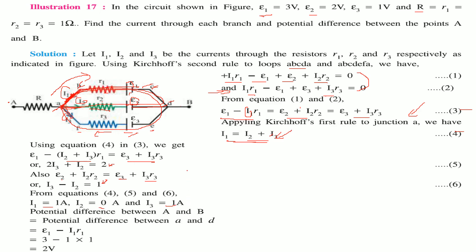The potential difference between A and B equals that between A and D, calculated as E1 − I1·R1 = 3 − (1)(1) = 2 volts.